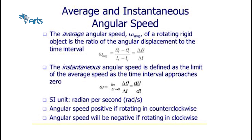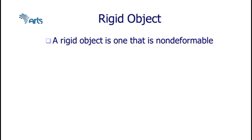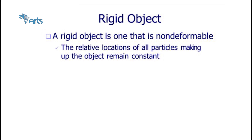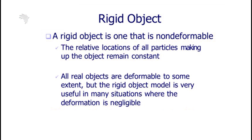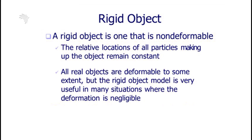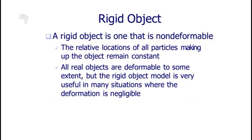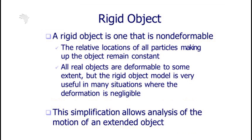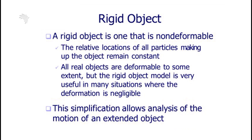A rigid object is one that is non-deformable — the relative location of all particles making up the object remains constant. All real objects are deformable to some extent, but the rigid object model is very useful in many situations where deformation is negligible. These simplifications allow analysis of the motion of an extended object.